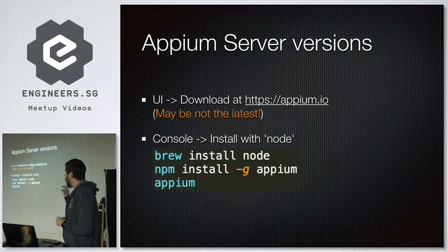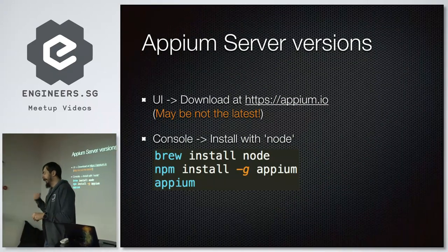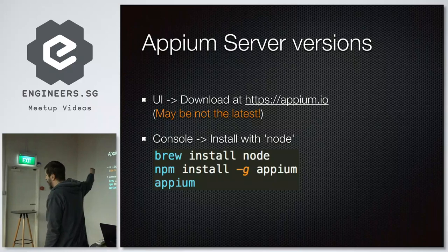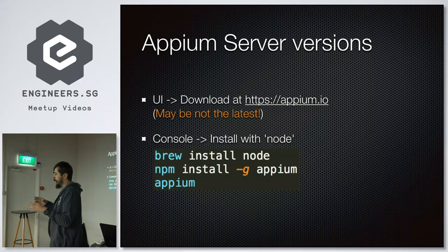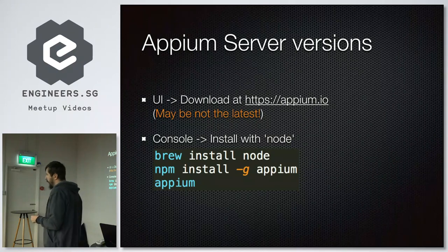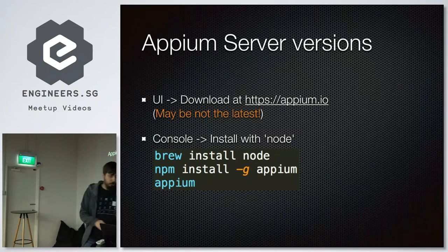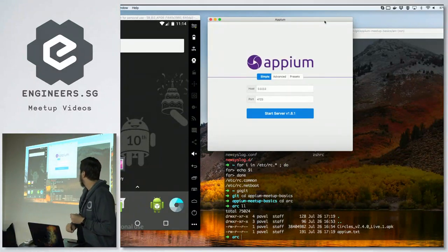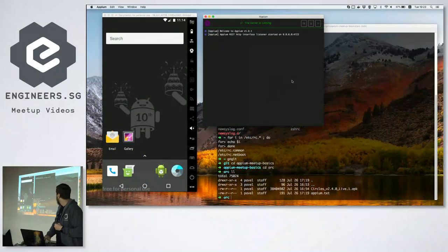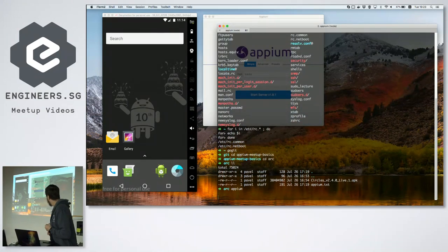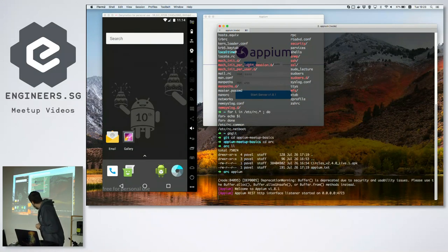There are two types of Appium servers — actually one, but one has a UI with additional features. The UI server you can download at appium.io. It includes an inspector. Or on Mac, you can just run three commands to get Appium server running from the command line. The UI version lets you press one button and start the server; the command line version does the same. For writing tests you'll likely use the UI version; for CI integration and Jenkins, the command line version is easier to script.